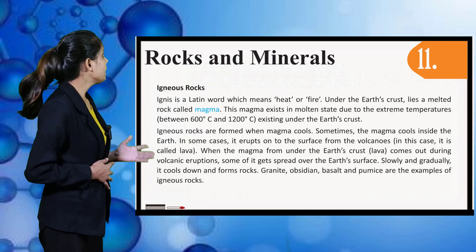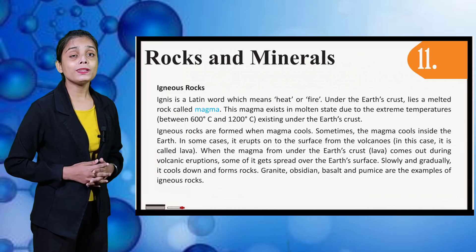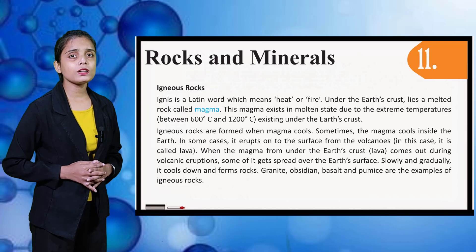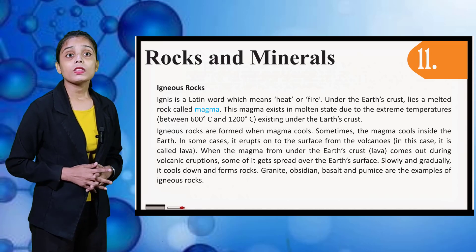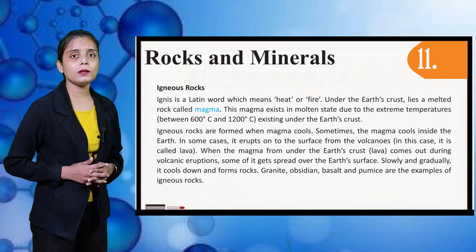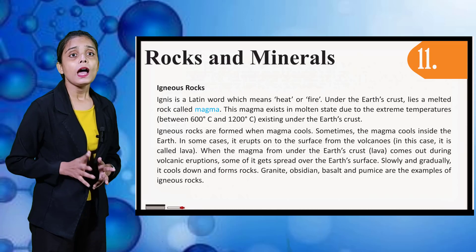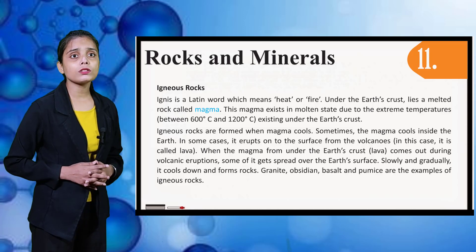Now we will see Igneous Rocks. Igneous is a Latin word which means heat or fire. Under the earth's crust lies a melted rock called magma. This magma exists in a molten state due to extreme temperatures between 600 degrees Celsius and 1200 degrees Celsius existing under the earth's crust. Igneous rocks are formed when magma cools.